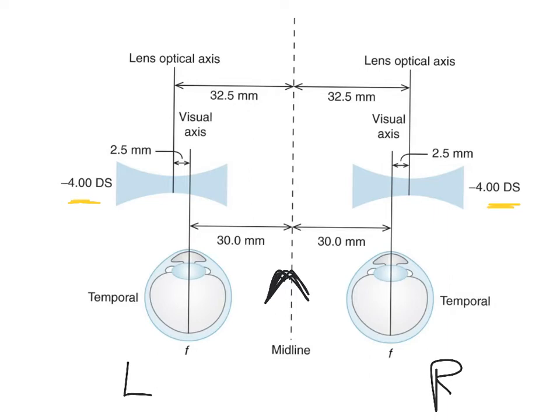So the optical axis, the lens optical axis right here. However, the patient is looking not through the optical axis but at a point other than the optical axis. So the patient is looking through here.